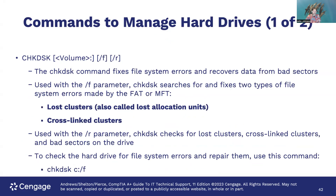One of the most important commands is CHKDSK — Check Disk — which has been around for a long time and is used to fix hard drive problems. Use CHKDSK to fix file system errors and recover data from bad sectors. The /F parameter searches for and fixes two types of file system errors — lost clusters and cross-linked clusters — found by the FAT or MFT. The /R parameter checks for lost clusters, cross-linked clusters, and bad sectors. To check and repair the hard drive, use CHKDSK [drive:] /F.